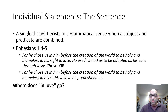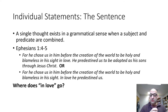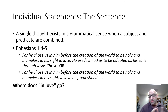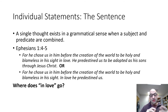For example, in Ephesians chapter 1, verses 4 through 5: 'For he chose us in him before the creation of the world to be holy and blameless in sight, in love.' Then we have a period. 'He predestined us to be adopted as his sons through Jesus Christ.' Another translation reads: 'He chose us in him before the creation of the world to be holy and blameless in his sight' — period. 'In love he predestined.' It's attaching two sentences to equal one thought.